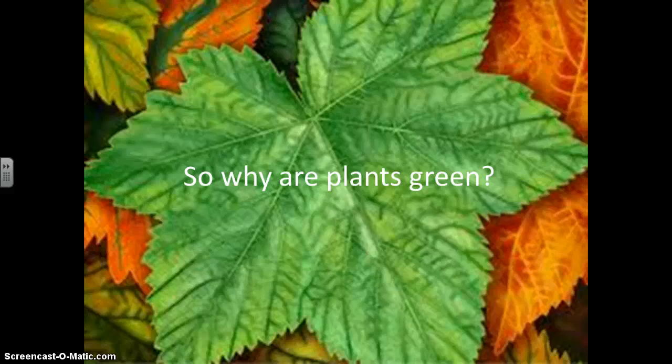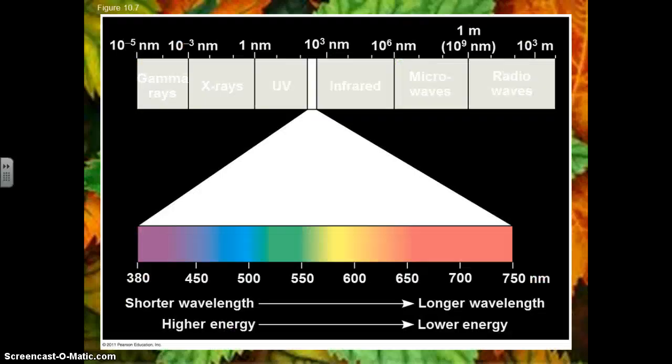Before we get into these light-dependent reactions really closely, we have to understand why plants are green. This would be standard wavelengths of light or energy. We can see this little sliver of wavelength here, and we'll expand it out. These are the wavelengths of light that we can actually visually see. If something has a wavelength of 380 nanometers, very small measurement, it appears to our eye as purple, and all the way up to 750 nanometers, it appears as red. Anything above that wavelength, longer wavelength becomes infrared, we can't see that anymore. Anything shorter becomes ultraviolet, we can't see that anymore. All of these different types of wavelengths of energy exist, these are only ones that we can see.